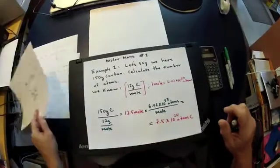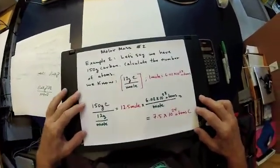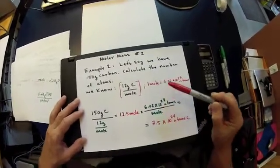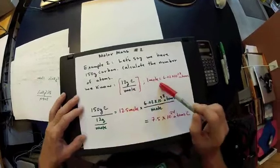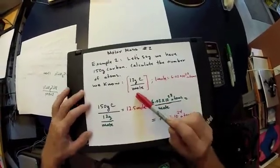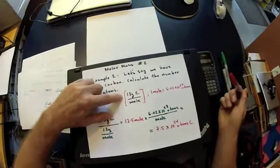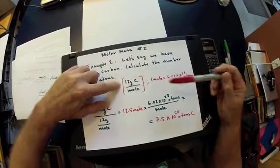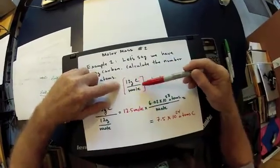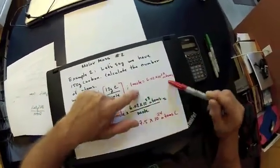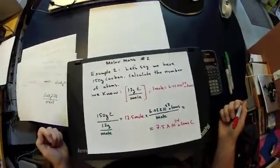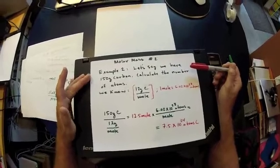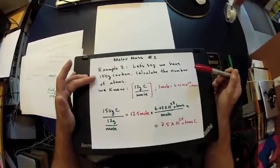Applying this concept to chemistry, we need two things: the molar mass of the element in question and Avogadro's number. The molar mass of carbon is 12 grams of carbon per mole, where one mole is 6 times 10 to the 23rd atoms. The challenge in this example is to determine the number of atoms in 150 grams of carbon.